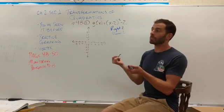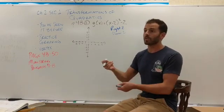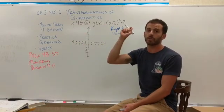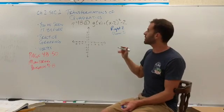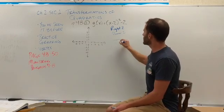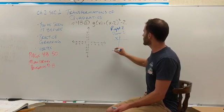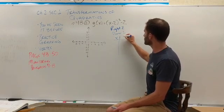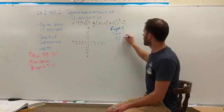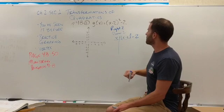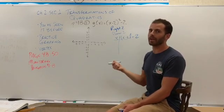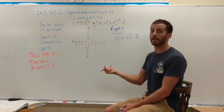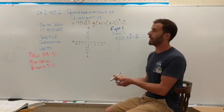So I already set up page 48, number 2 for us. G of x equals the quantity x minus 2 squared minus 2. And the directions are to describe the transformation, which we've done before. That was most of chapter 1. And then graph each function. So I'm going to go from left to right. Nothing out here. This is a minus 2, but it's inside the parentheses, which means it's always going to trick me.